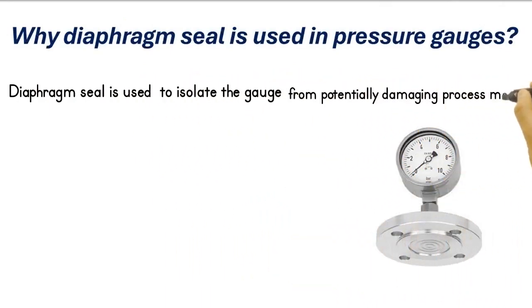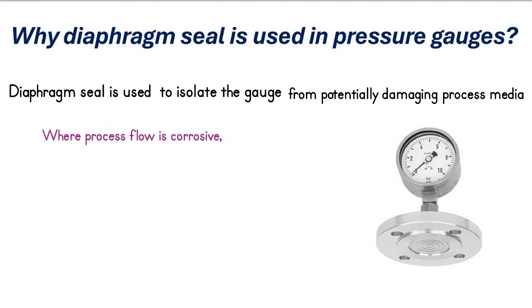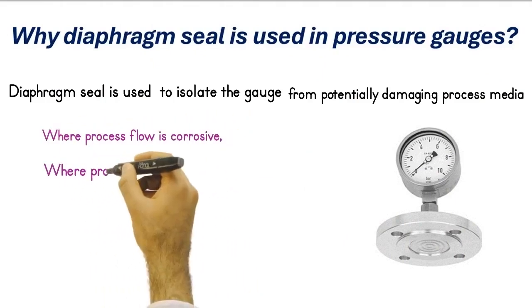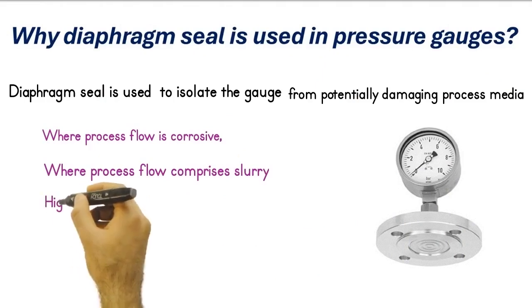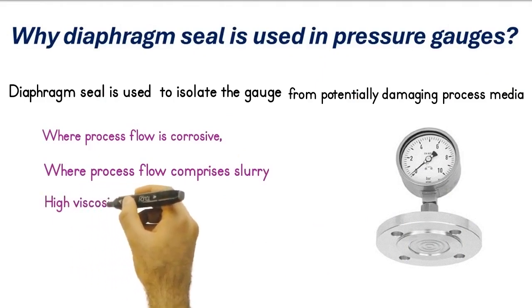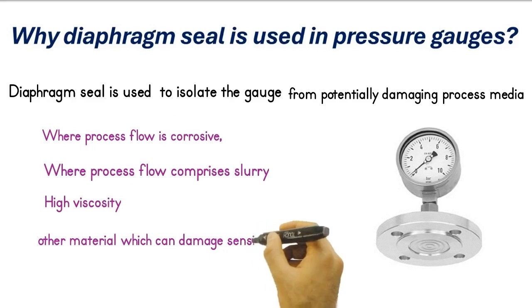Why is a diaphragm seal used in pressure gauges? The diaphragm seal is used to isolate the gauge from potentially damaging process media — for example, where the process flow is corrosive, or where the process flow comprises slurry, high viscosity, or other material which can damage the sensing element.